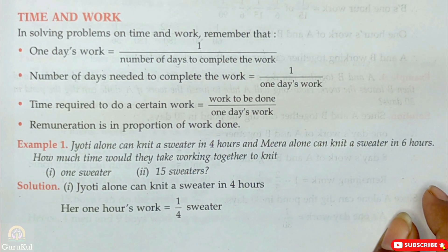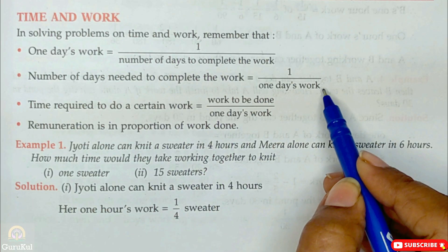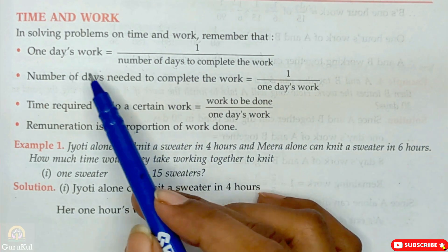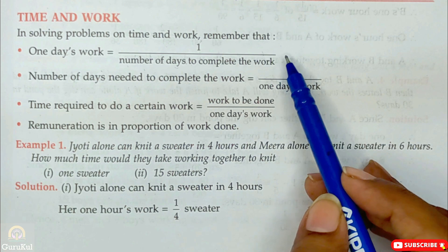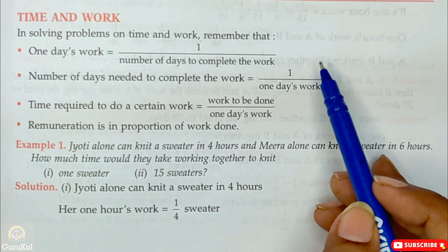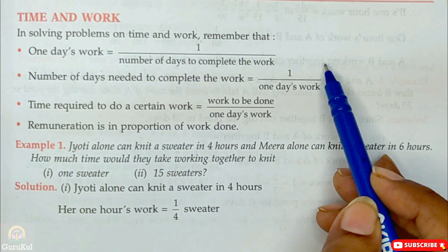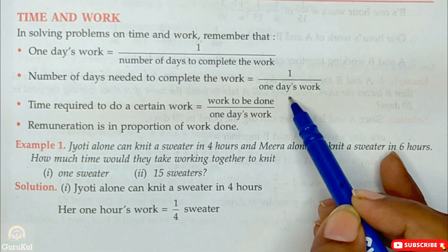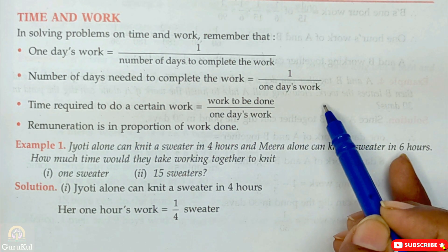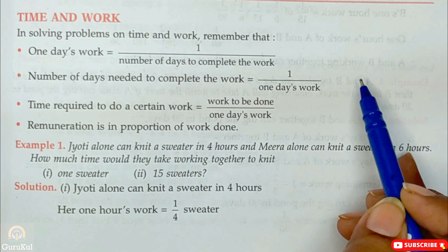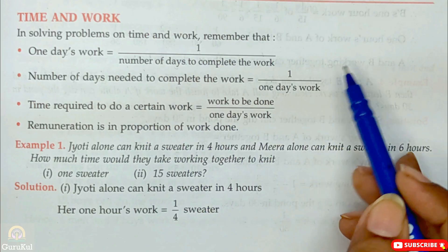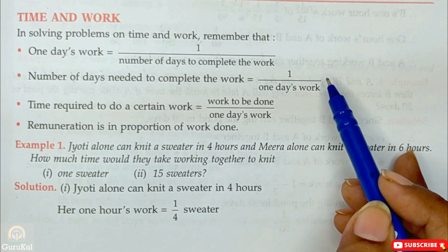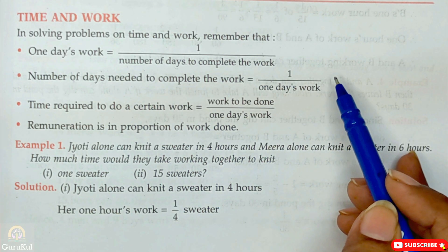So one divided by one day's work gives us the total time. For instance, if a particular work is done in ten days, then in one day the work done is one by ten. To find the complete time, we write one divided by one-by-ten, which equals ten by one — that is ten days. Reciprocal means upside down.